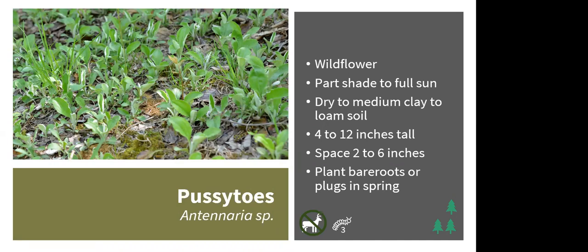Pussy toes is an overlooked ground cover option. There are a couple of species — a prairie pussy toes for full sun and one simply called pussy toes for shaded areas. They're only a couple of inches tall, grown mainly for their ground cover foliage, but they do produce small white flower clusters resembling cat feet — hence the name — with stalks reaching 4–12 inches. Plant as bare roots or plugs in spring. They're generally not eaten by deer, though some reports exist. They support 3 caterpillar species.